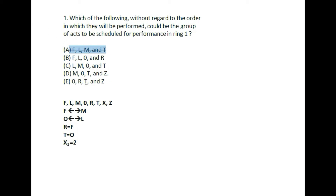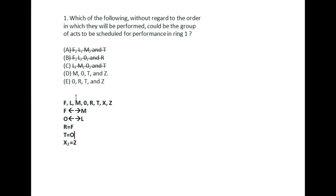Checking further: F and M are not together in the remaining options. Now checking the condition that O and L must be in different rings — if any option has O and L together, we eliminate it. Option B has O and L together, so it is eliminated. Option C also has O and L together, so it is eliminated. Next, checking the condition that F and R must be in the same ring: any option where F and R are not together is eliminated.